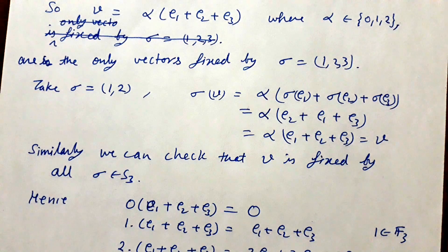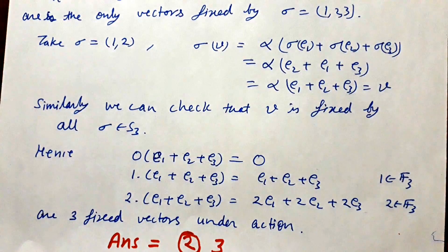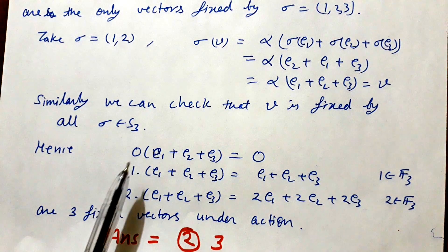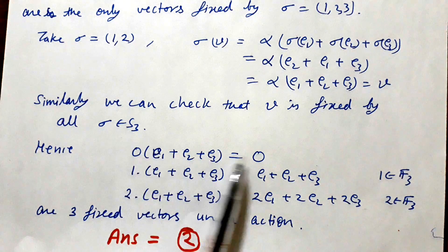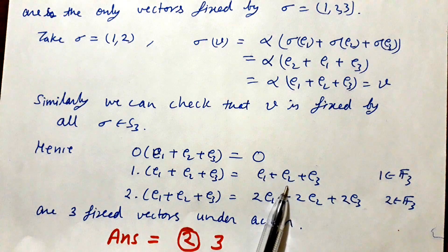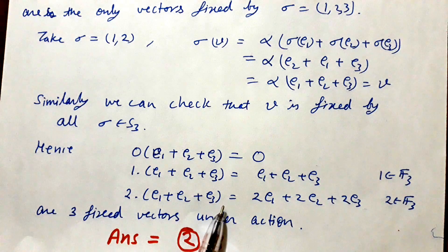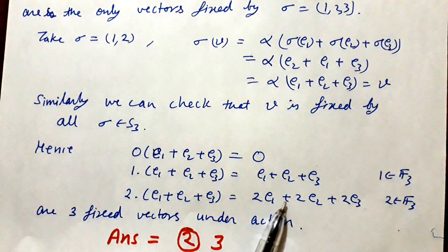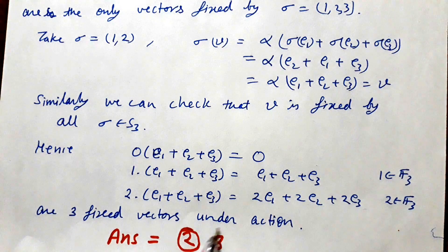There are exactly three vectors fixed by all elements of S3. These are: 0*(E1+E2+E3) = 0, 1*(E1+E2+E3) = E1+E2+E3, and 2*(E1+E2+E3) = 2E1+2E2+2E3, where 2 belongs to F3. So the answer is option number 2, and the cardinality is 3.